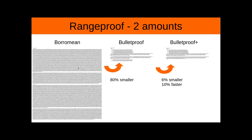This happened because we started having the proof size in logarithmic order with regard to the number of bits of the amount, instead of linearly as before. Someone found a way to go from order N to order of log N, and this had a big impact on the transaction size.